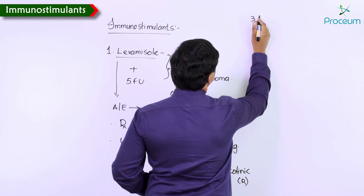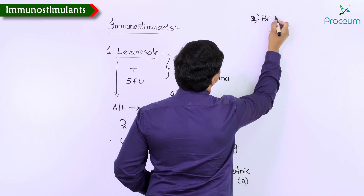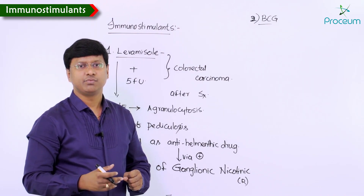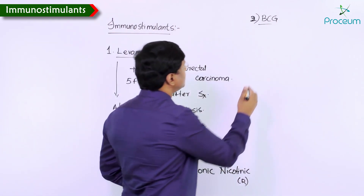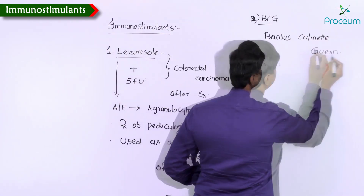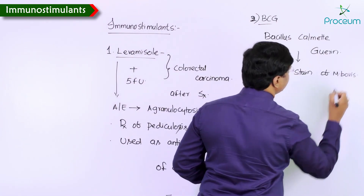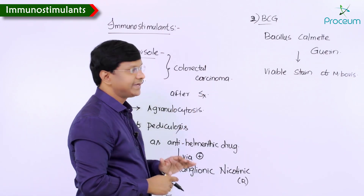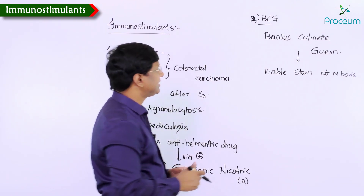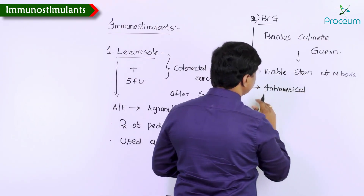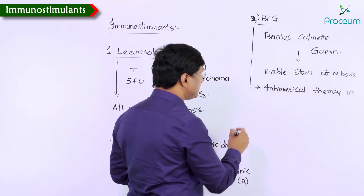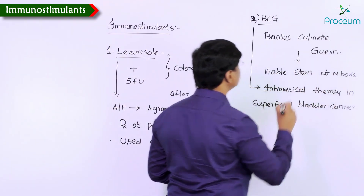Another immunostimulant is BCG — Bacillus Calmette-Guérin. It is a viable strain of mycobacterium bovis. BCG is useful as intravesical therapy for superficial bladder cancer.